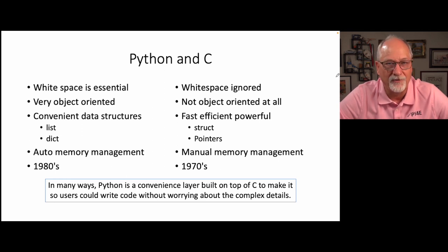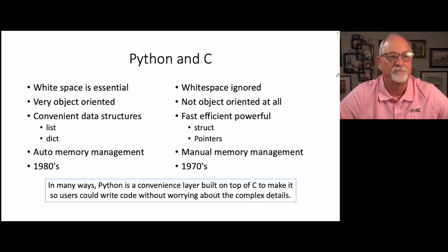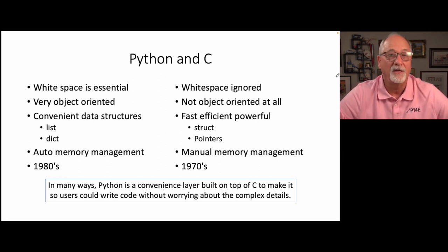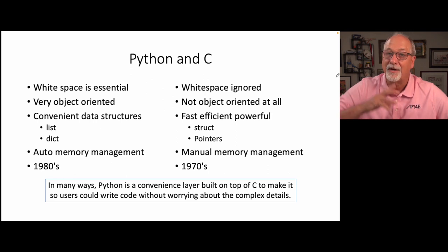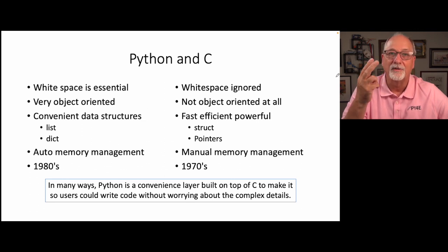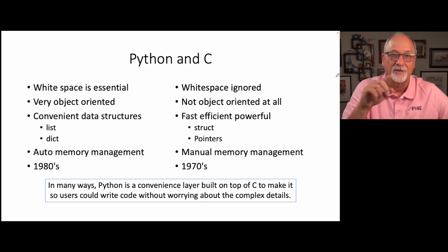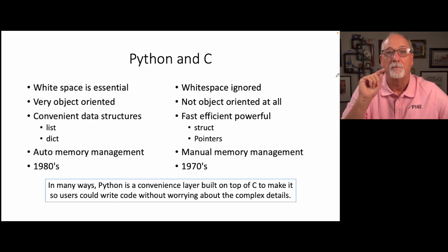Python has wonderfully convenient data structures in the form of lists and dictionaries. PHP has arrays, JavaScript has objects — beautiful, very object-oriented structures. C does not. It's fast, efficient, powerful. It's got structs and pointers, and they're not convenient, but they are scorchingly fast. By the time we're done, we will see how to use structs and pointers to build lists and dictionaries, following down the path of how Python achieves what it does by writing C.